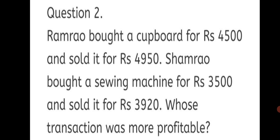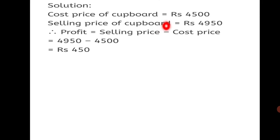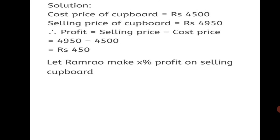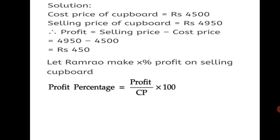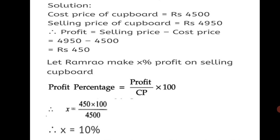For Ram Rao: Cost price of cupboard = Rs. 4,500 and Selling price = Rs. 4,950. Profit = 4,950 − 4,500 = Rs. 450. Let Ram Rao make X percent profit on selling cupboard. Profit% = (Profit / CP) × 100, so X = (450 / 4,500) × 100. Reducing zeros: 450 ÷ 45 = 10. So X = 10%. Ram Rao made a profit of 10%.